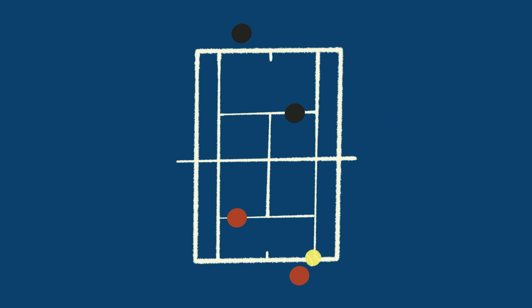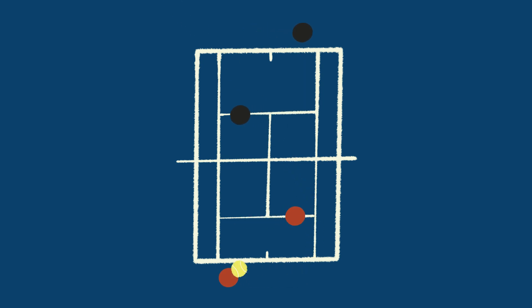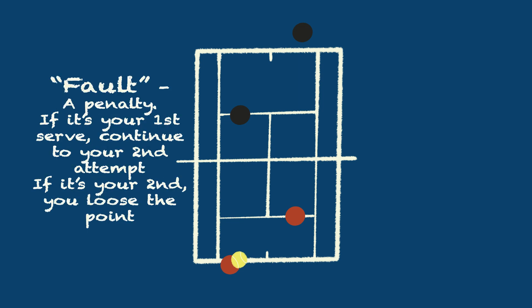You get two chances to serve. You always start a point by serving on the right side into the diagonal service box, then you switch corners for each point. You always serve behind the baseline. If you step past the baseline before you hit the ball, it is considered a foot fault.